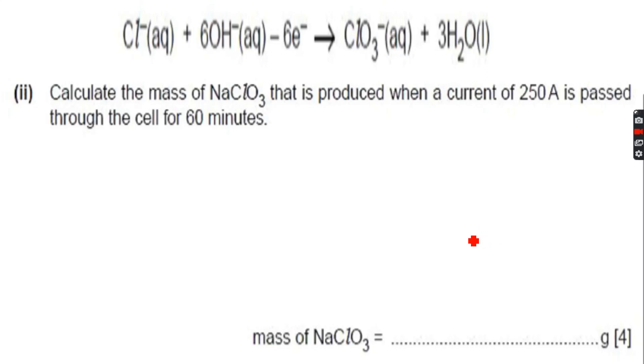Now we have another question. This equation is a half equation because you can see electrons. Calculate the mass of NaClO3 that is produced when a current of 250 amperes is passed through the cell for 60 minutes.